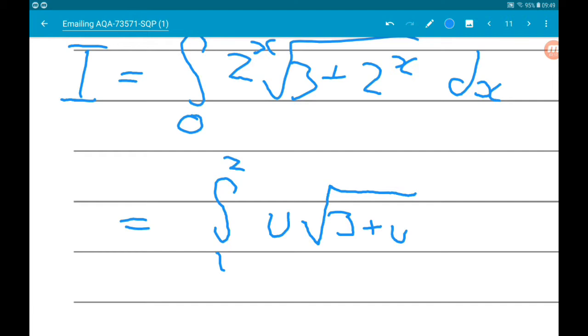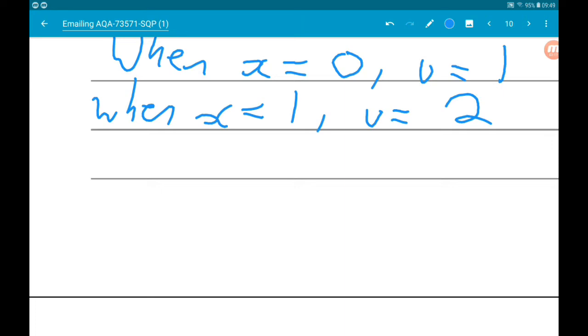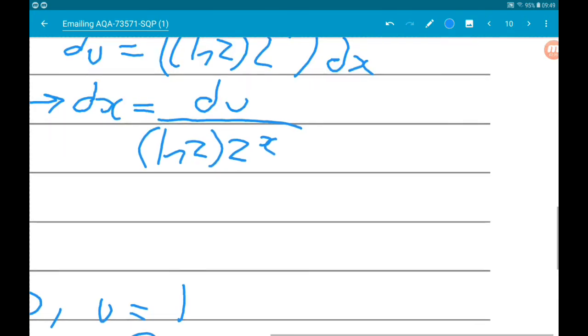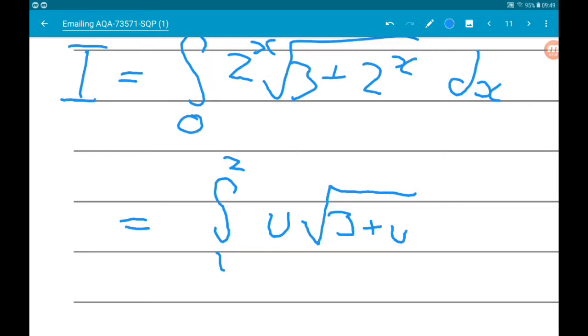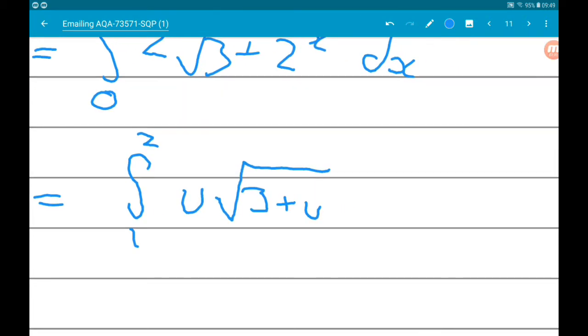And then dx was du over log 2 times 2^x. So dx is du over log 2 times 2^x, but remember 2^x is u, so we get a nice cancellation here.